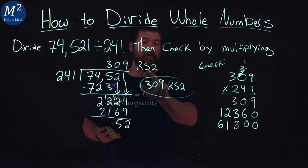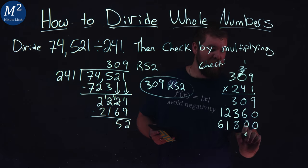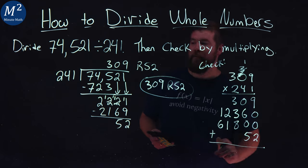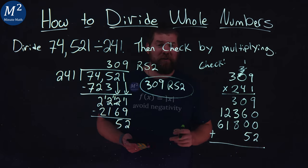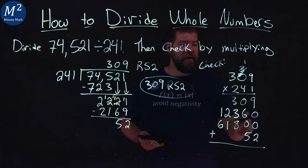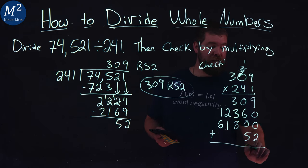Now, we also want to add our 52 to it. So, we have 52 at the bottom for that remainder. We're going to add all that up. We should get 74,521 if we did our work right. 9 plus 0 plus 0 is still 9 plus 2 gives me 11.